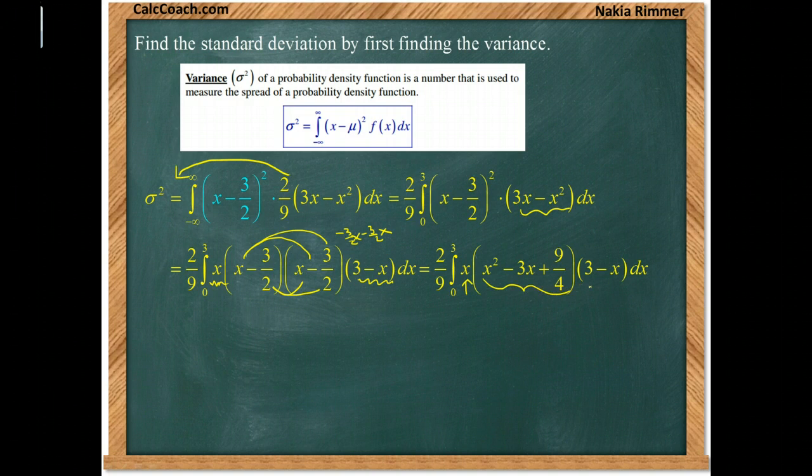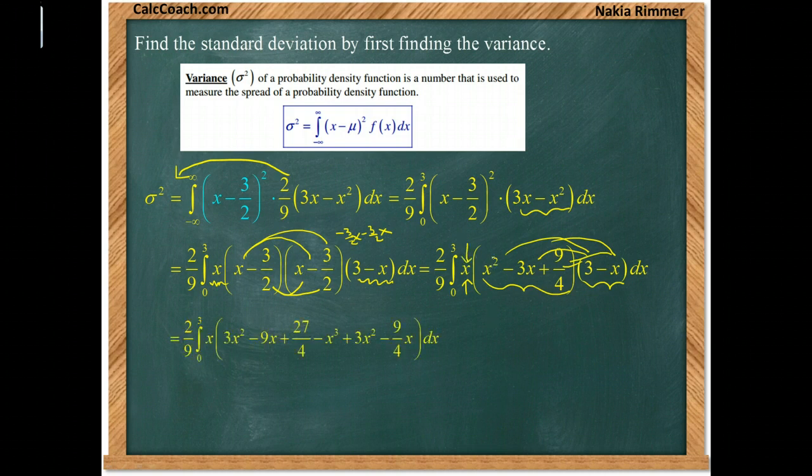Foil out the squaring of that and now we're going to multiply out here 3 times these 3 guys and then negative x times these 3 guys. And then later we'll put the x in at the very very end. So 3 times x squared, 3 times negative 3x, and 3 times 9 fourths gives you 3x squared minus 9x plus 27 over 4. Then x times all these guys and you're bumping the exponent up by 1. So x cubed and 3x squared and 9 fourths of x but be careful with the sign here you'll get a negative, a positive, and then a negative.